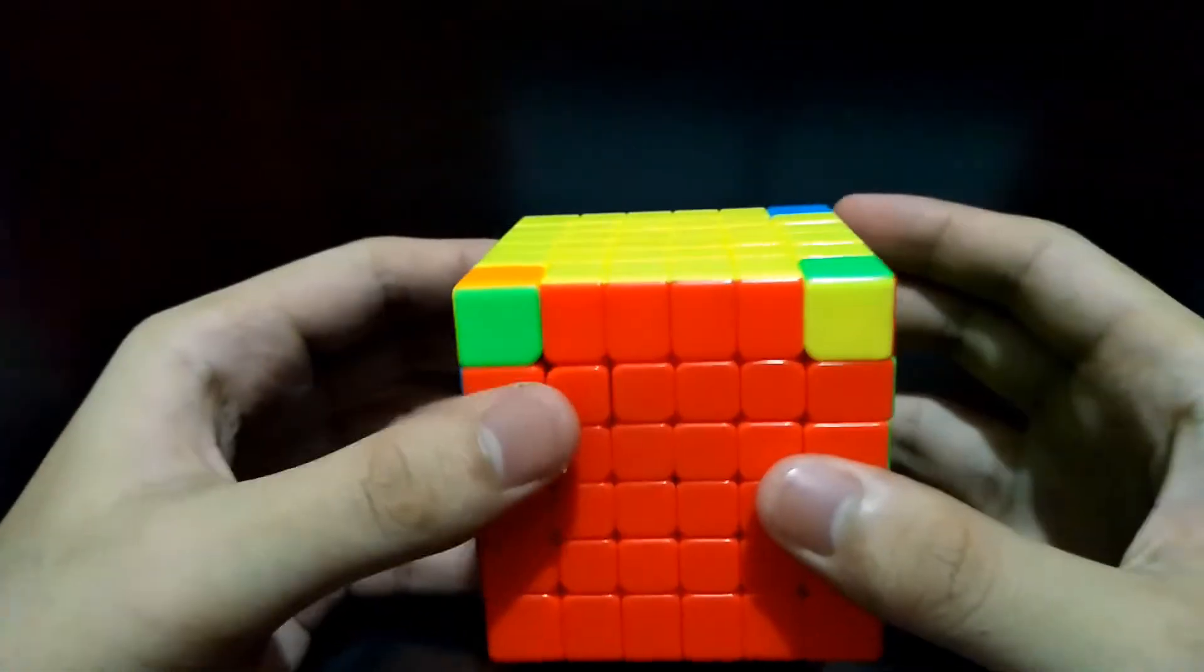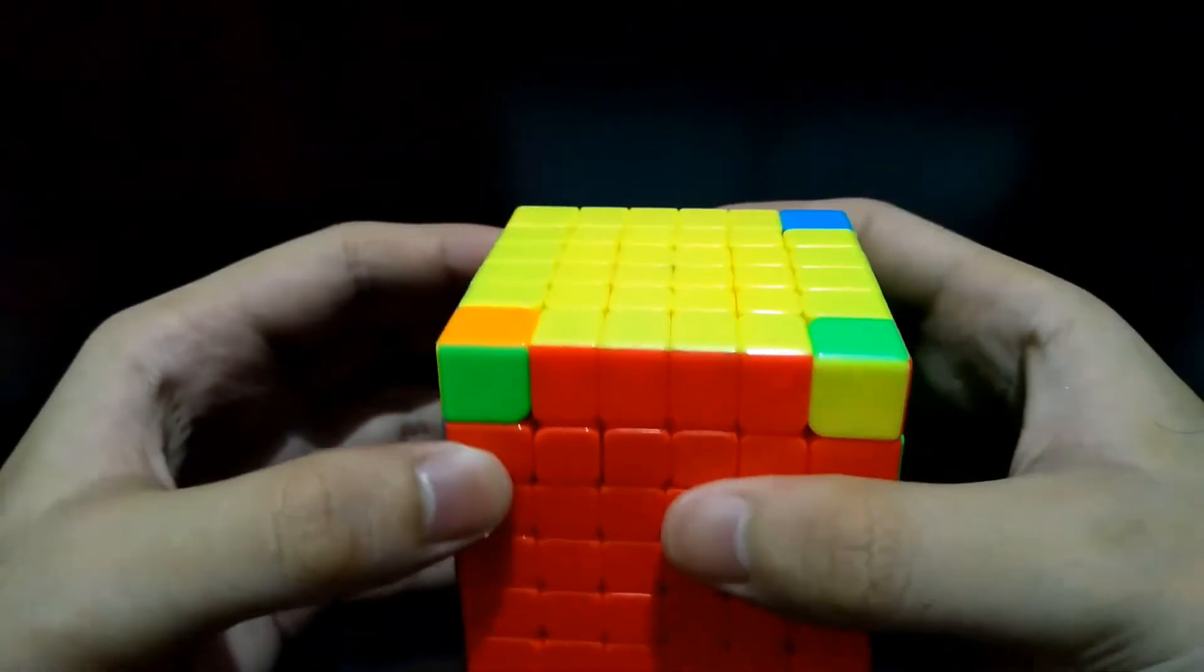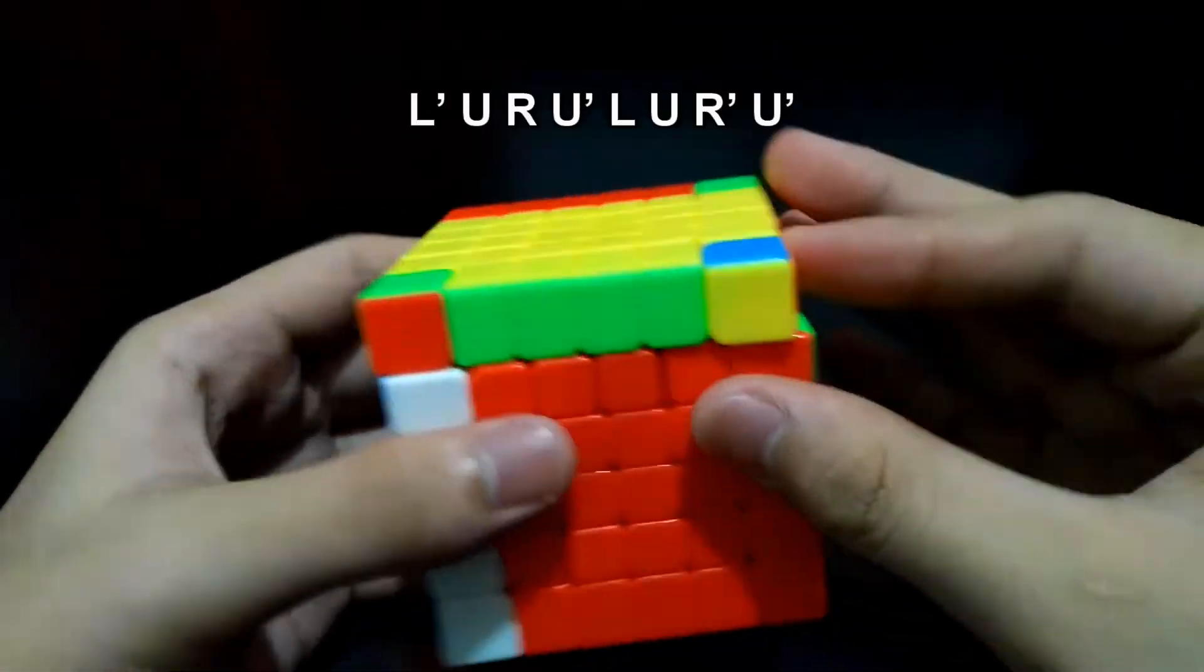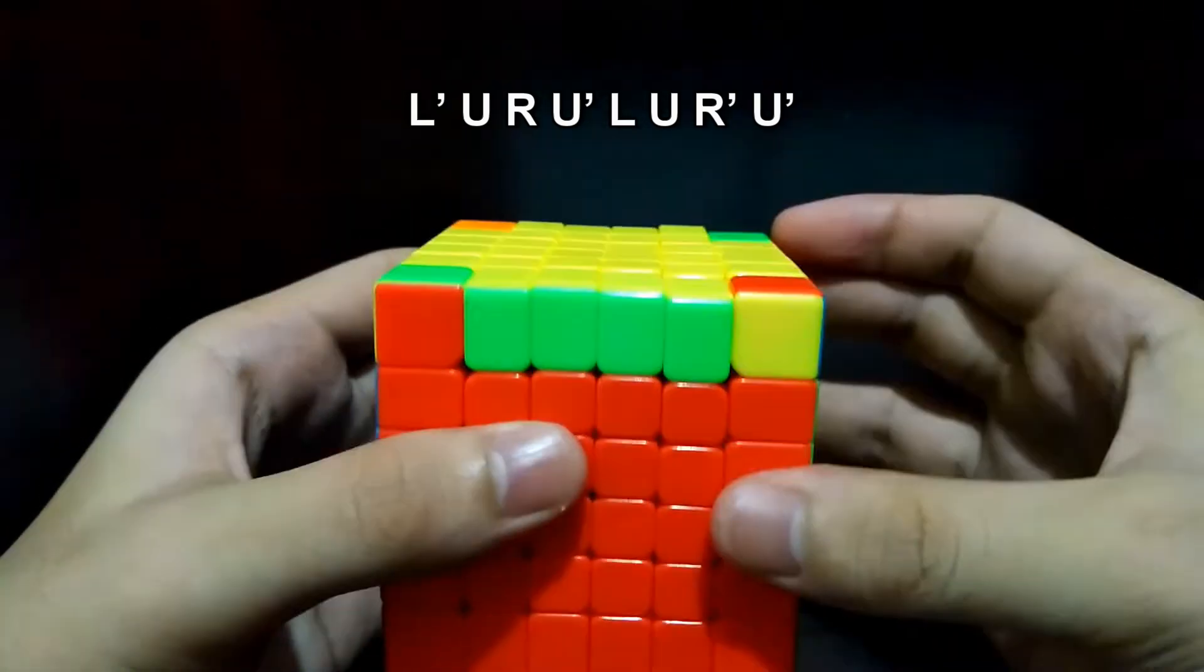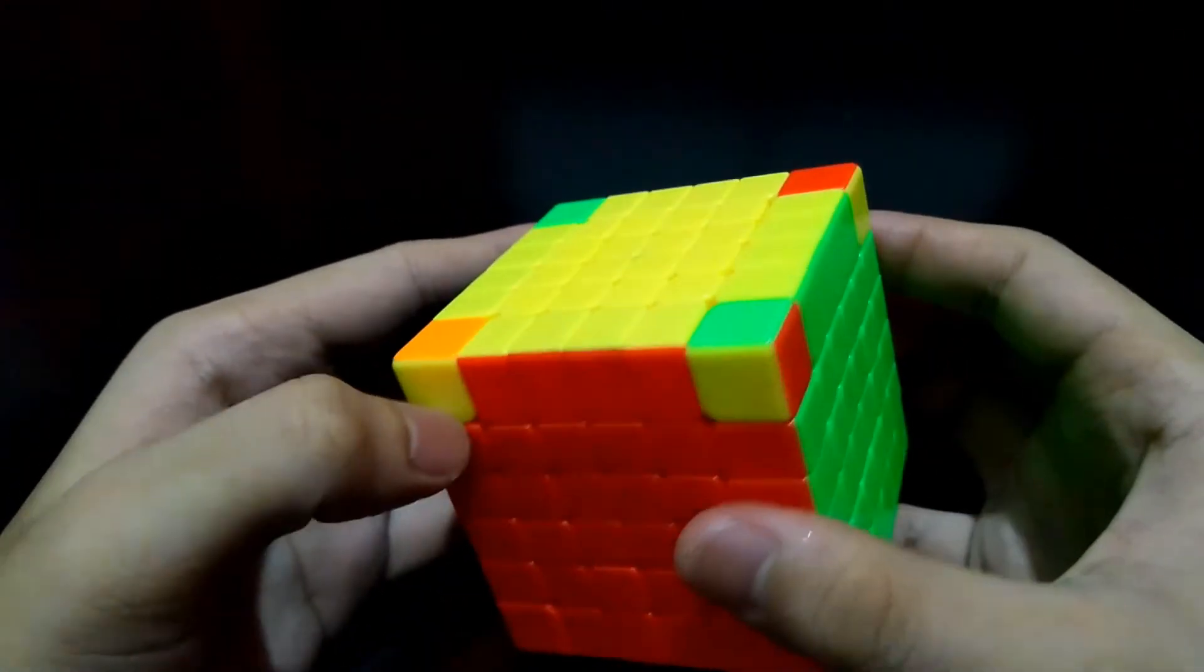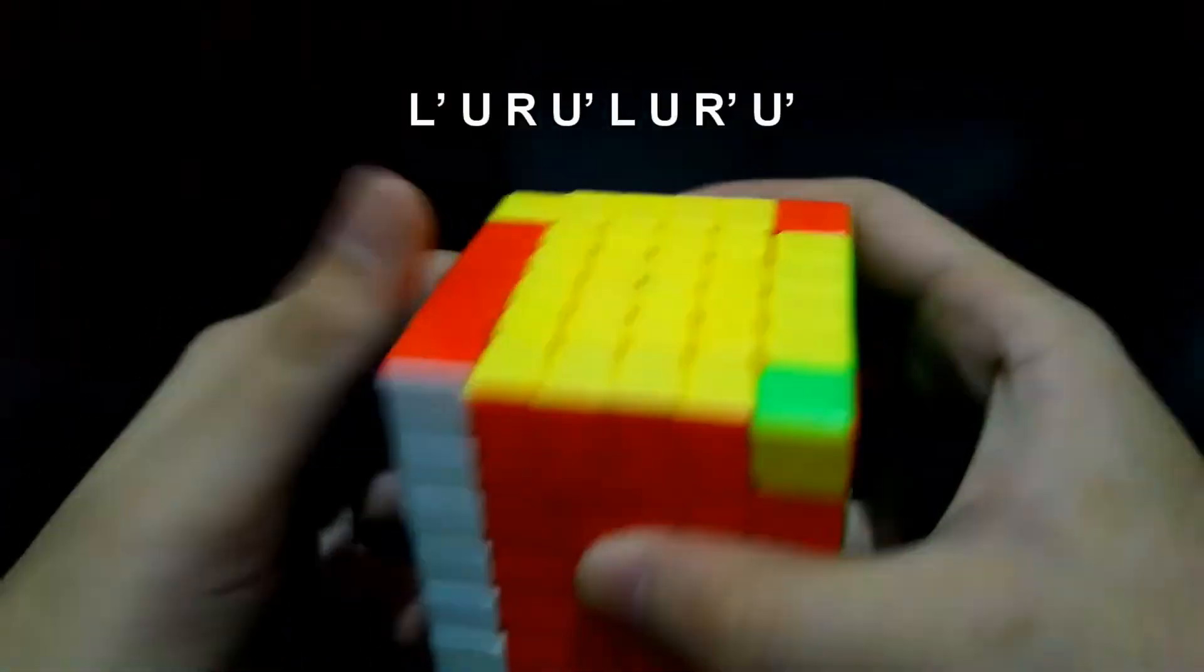Now this one's correct. Let's put it at the right and do the algorithm for placing the corners: Left prime, Up, Right, Up prime, Left, Up, Right prime, and Up prime. If it's not yet still correct, let's do the algorithm again.